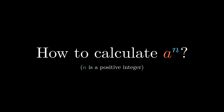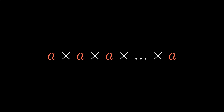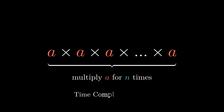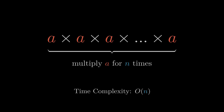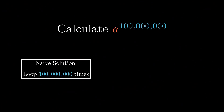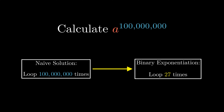You might think this problem is easy when you first see it. We can simply repeatedly multiply a for n times. However, this is a naive approach and its time complexity is O(n). When n is equal to 100 million, we would need 100 million iterations to get the answer. On the other hand, with the binary exponentiation algorithm we are going to introduce today, we can calculate the answer with only 27 iterations.